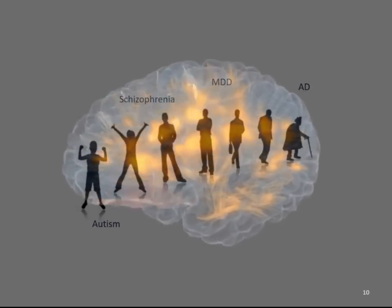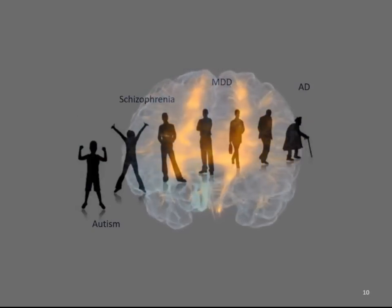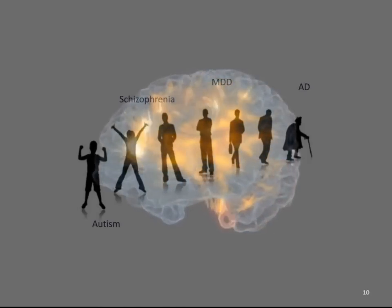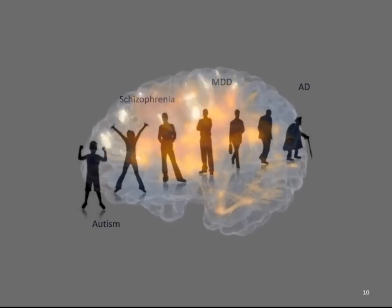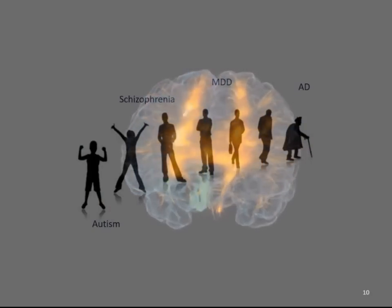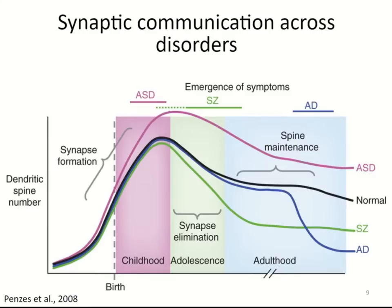There are different levels of resolution for understanding electrical activity problems in each disorder. In humans, we can only study by imaging or post-mortem histology, but very specific alterations at the synaptic level remain unknown. Why is the synaptic level important? In a nice summary by Penzes in 2008, still relevant today, these disorders all share changes in dendritic spine number. In the normal case, there is an increase in dendritic spine number during childhood — these spines represent excitatory synapses.